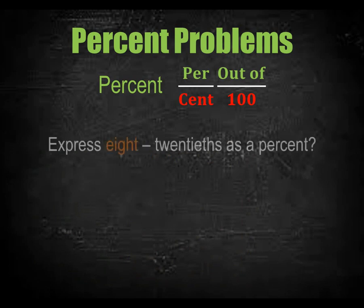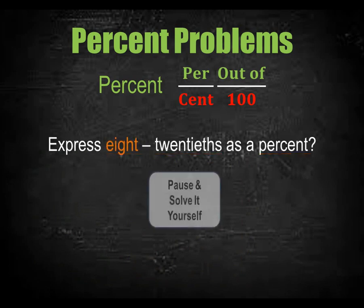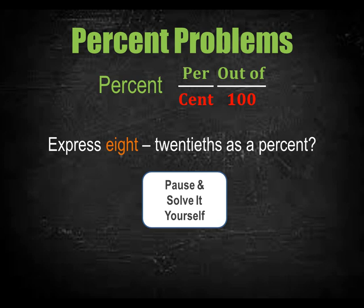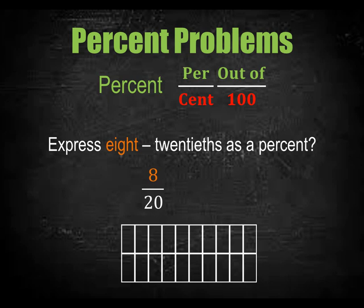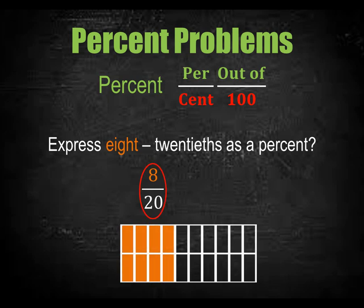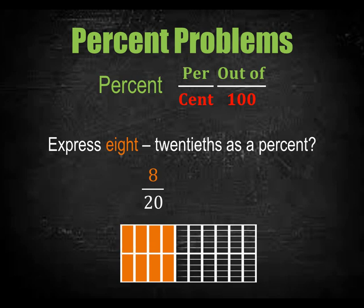Before percent problems are started, let's express 8 twentieths as a percent. 8 twentieths is the fraction that means 8 out of 20. Suppose there is a figure that is divided into 20 equal parts and out of these 20 parts, 8 parts are shaded. This is what the fraction 8 twentieths means.